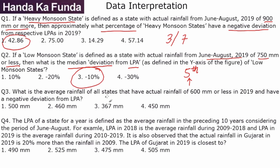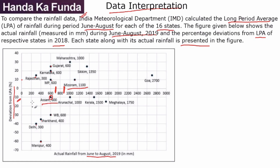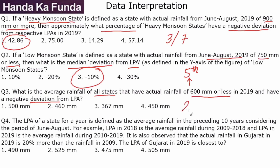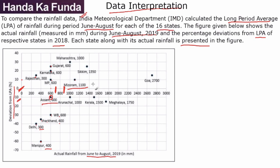Question 3: What is the average rainfall of all states that have actual rainfall of 600 mm or less and have a negative deviation from the LPA? So that means below the 600 mm line and on the negative side. Those states are Assam, West Bengal, Jharkhand, Delhi, and Manipur — 5 states. Adding up: Assam and West Bengal give 600 + 600 = 1200; Jharkhand adds 400 to get 1600; Delhi adds 300 to get 1900; Manipur adds 400 to get a total of 2300. Average = 2300 ÷ 5 = 460 mm. Very simple, very straightforward — all three questions just required counting a few figures.